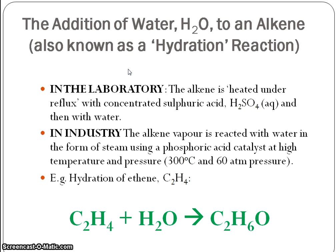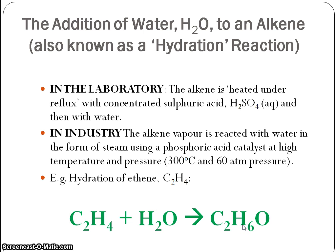Let's take a look at the addition of water, or hydration. There are two ways: in the lab we use concentrated sulfuric acid and water; the industrial process uses steam with a phosphoric acid catalyst at high temperature and pressure. The equation using molecular formulae shows ethene with water giving us C2H6O, which is in fact ethanol.